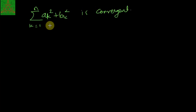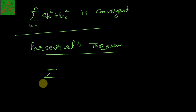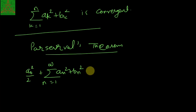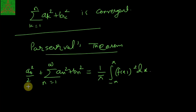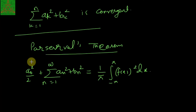Hence this summation k from 1 to n of (aₖ² + bₖ²) is convergent. Now, what is Parseval's identity? The theorem states: summation n from 1 to infinity of (aₙ² + bₙ²), with a₀²/2 also added, equals (1/π) times the integral from minus π to π of f(x)² dx. This is known as Parseval's identity, which involves all the Fourier coefficients a₀, aₙ, and bₙ. In Bessel's inequality you have the summation less than or equal to (1/π)∫f²dx, and in Parseval's identity you have equality by adding the a₀²/2 term.